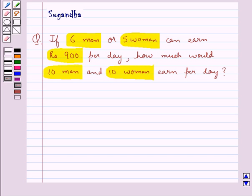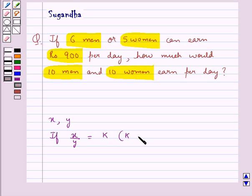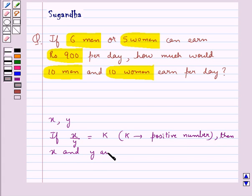Before moving on to the solution, let's see when are two quantities X and Y in direct proportion. X and Y are said to be in direct proportion if they increase or decrease together in such a manner that the ratio of the corresponding values remains constant. That is, if X upon Y is equal to K, where K is a positive number, then we say X and Y are in direct proportion.